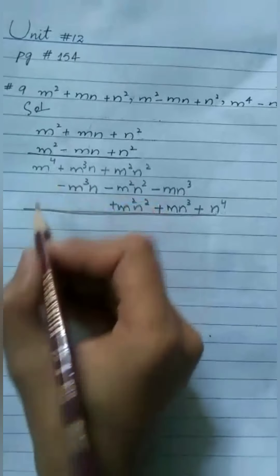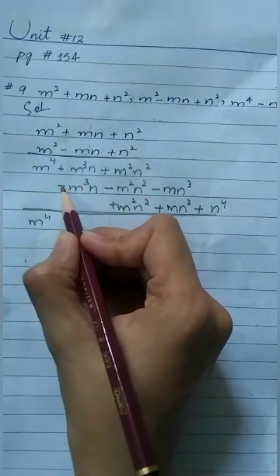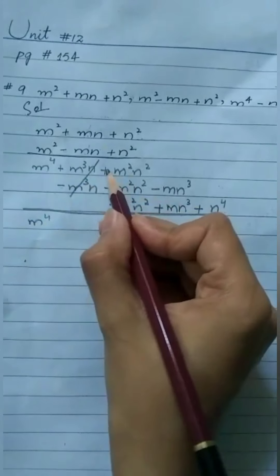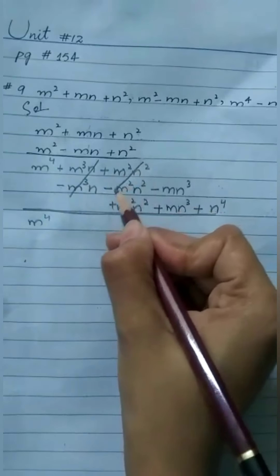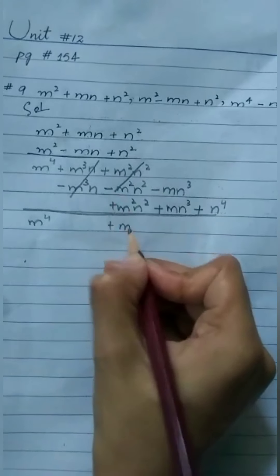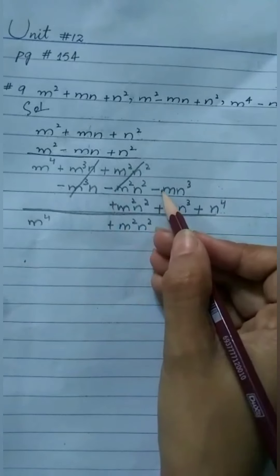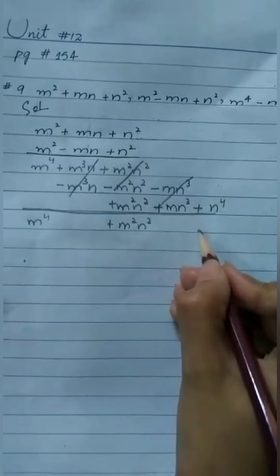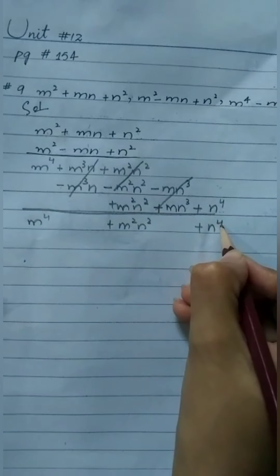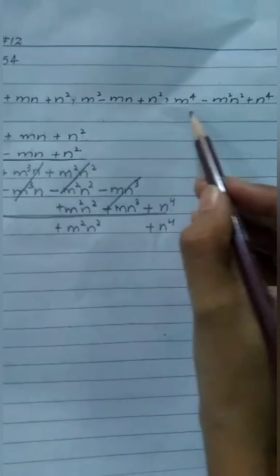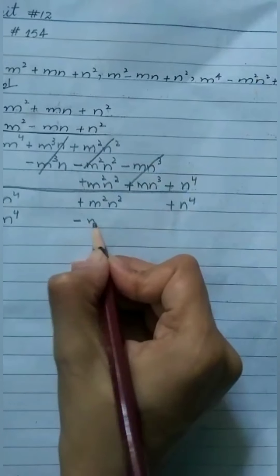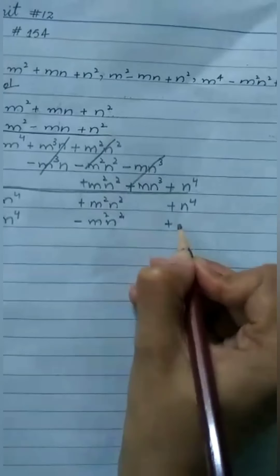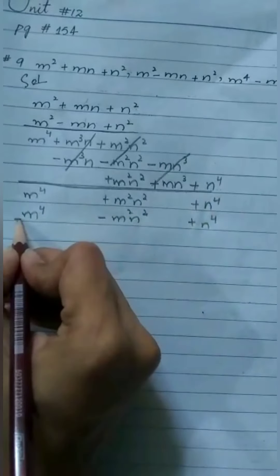Now simplifying: m⁴ remains. Plus and minus cancel, leaving plus m²n². The minus m²n² and plus m²n² also cancel, so remaining is plus m²n². Then minus mn³ and plus mn³ cancel. And plus n⁴ remains. So the result of the first two expressions is m⁴ + m²n² + n⁴. Now we write the third expression: m⁴ - m²n² + n⁴.